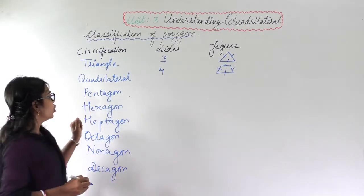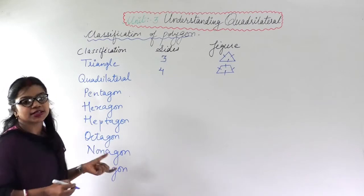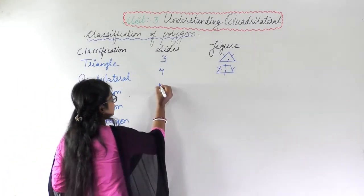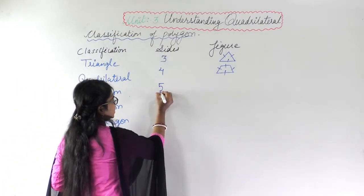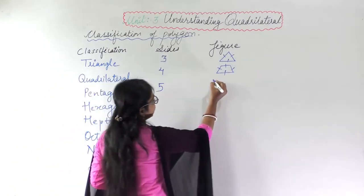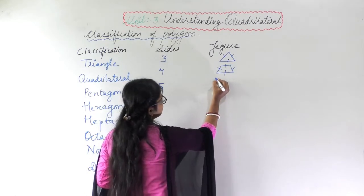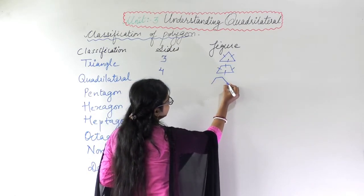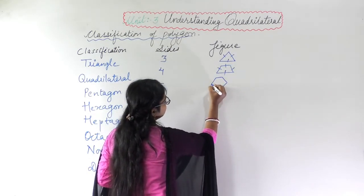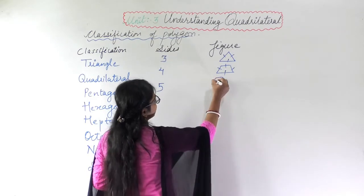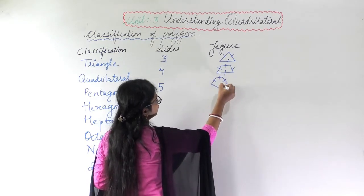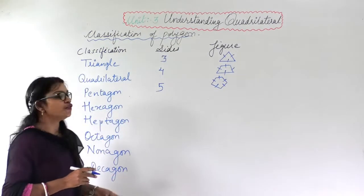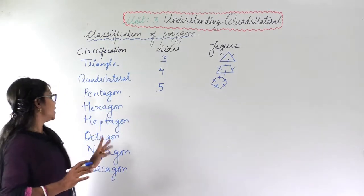Similarly, pentagon — the word 'penta' means five. So how many sides? Five sides. I can make a pentagon with one, two, three, four, and five sides. So a pentagon has five sides.